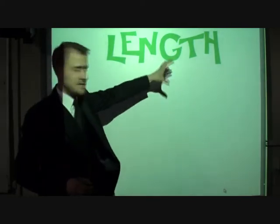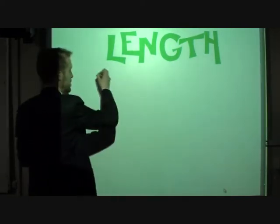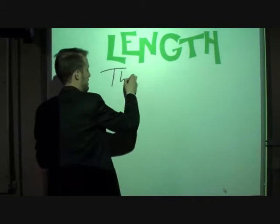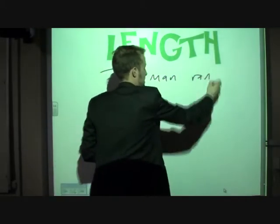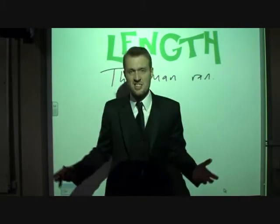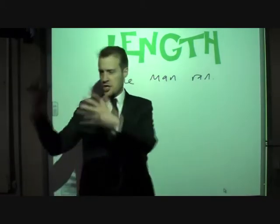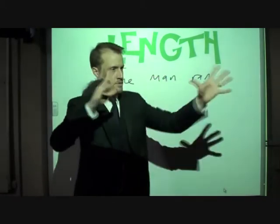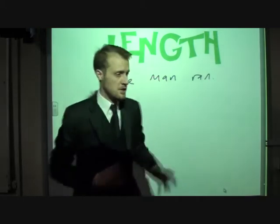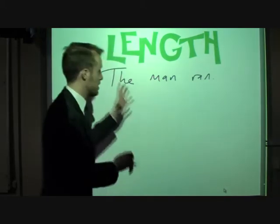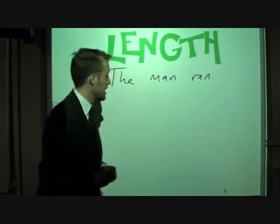Once you've had one-word sentences, the next size up is a simple sentence. So: 'The man ran' — that's a simple sentence. It's one simple piece of information. The man ran. The child cried. The car drove down the street. I ate a large sandwich. One simple piece of information — that's a simple sentence.